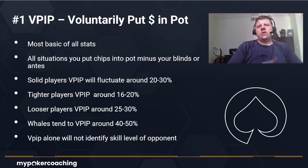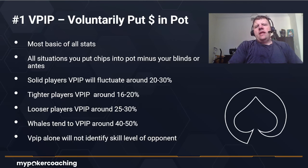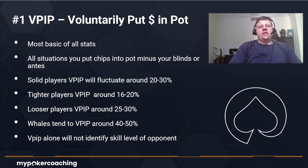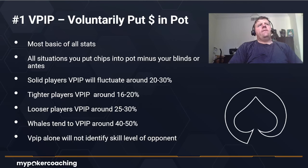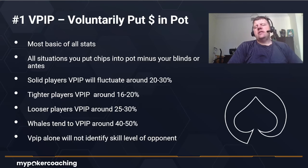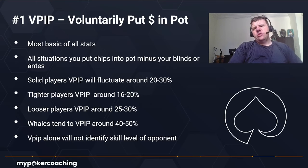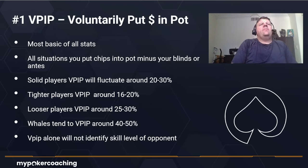VPIP counts every opportunity you have to add money to the pot — whether that's a raise first in, a call, a three-bet, or folding to a three-bet — any time the first action is to enter the pot. It takes all those opportunities and measures how often you enter the pot versus not. What this stat does not include is when you're in the big blind, someone limps, and you check, because you didn't put any additional chips in — your big blind was a forced bet.